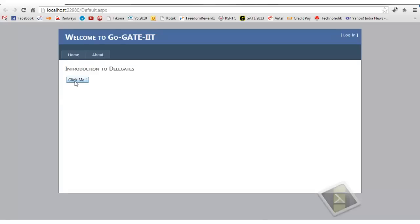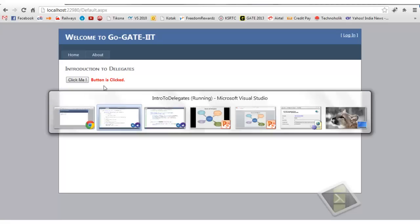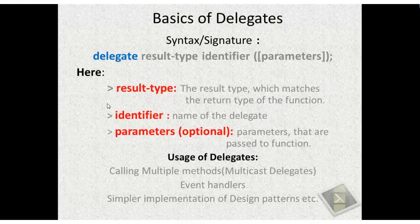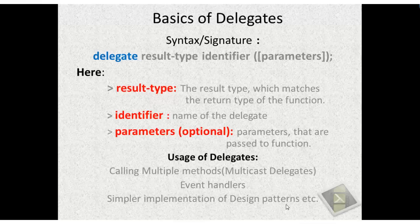To summarize, the signature of a delegate uses the 'delegate' keyword followed by a return type, an identifier name, and optional parameters. We have seen all three cases: without parameters, with a parameter, and with a return type. Delegates are mainly used for calling multiple methods using multicast delegates, in event handlers, and for simpler implementation of design patterns. I hope you are clear with the basics of delegates.